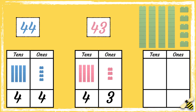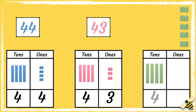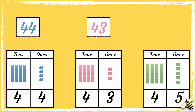Now let's count the green bricks. There are four tens and there are five ones, so there are 45 green bricks.